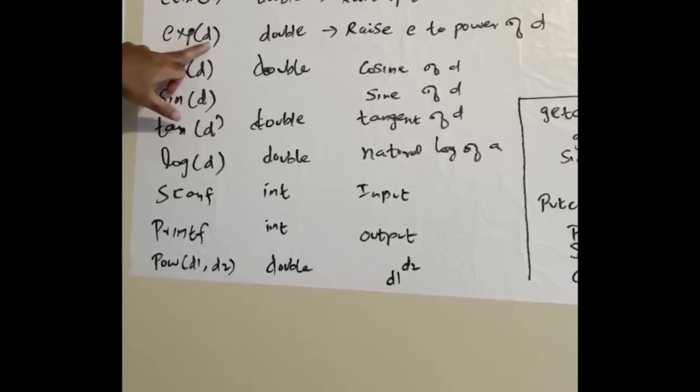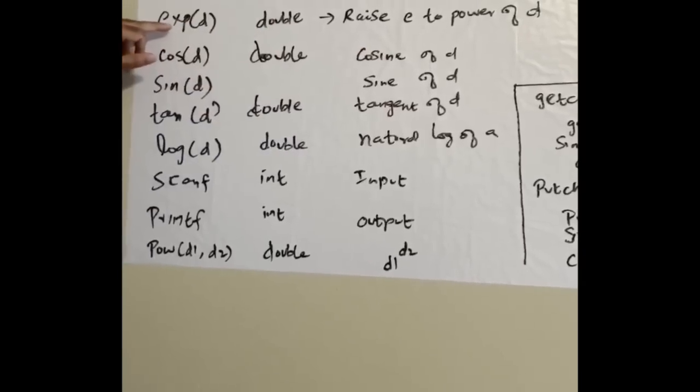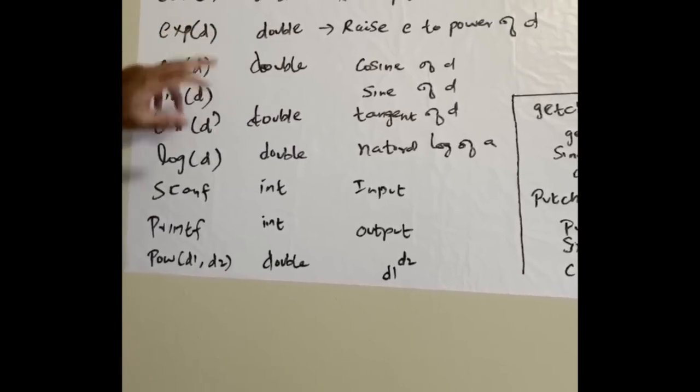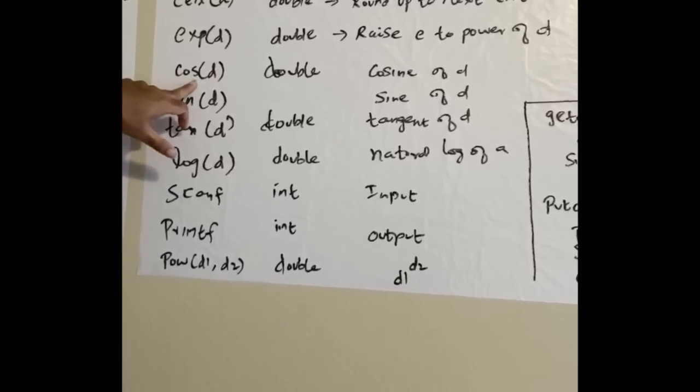Exponential exp(d) returns a double, raises e to the power of d. For example, exp(5) means e to the power 5. Cos(d) is trigonometry geometry, returns double cosine value of d.